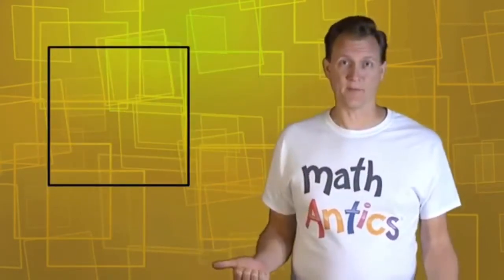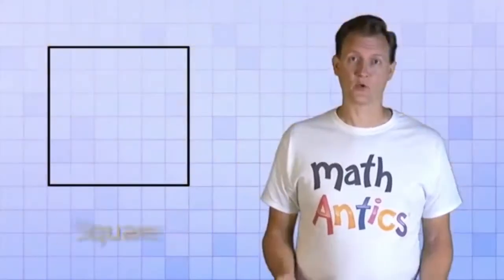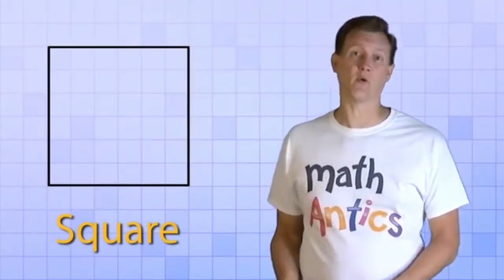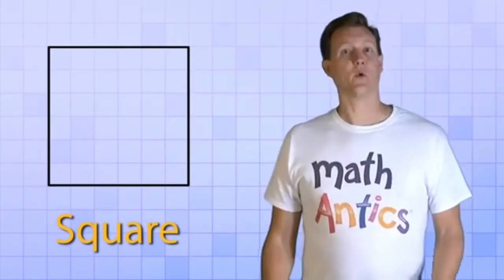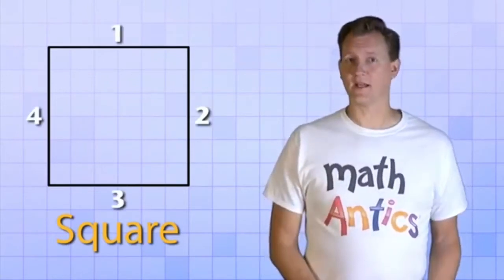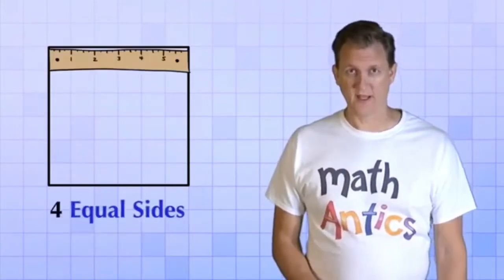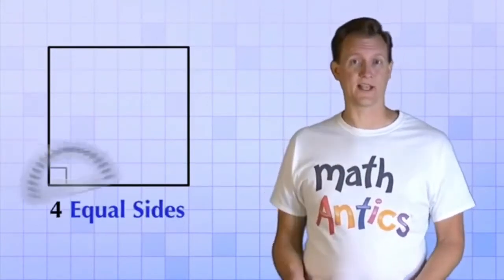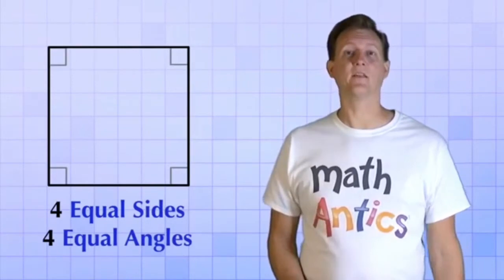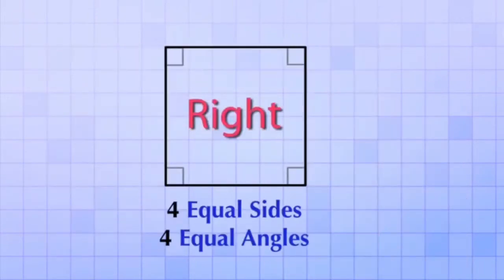You should recognize this shape. Of course, it's a square, and a square is a special kind of quadrilateral. It's a quadrilateral because it has four sides, and it's special because all four of those sides are exactly the same length and all four of its angles are exactly the same size. In fact, they're all right angles.